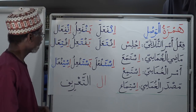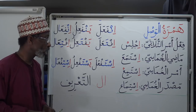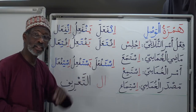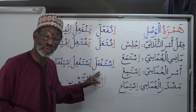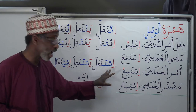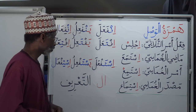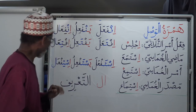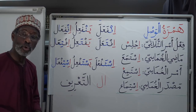Now let's look at istaf'ala — that is your sudasi, form ten, which carries six letters. The alif there in the past tense should not be written with the Hamzah symbol. And in the masdar of the sudasi form, it should also not have the symbol of Hamzah.